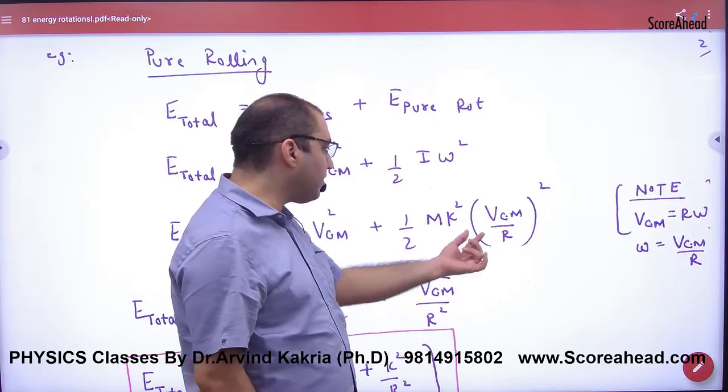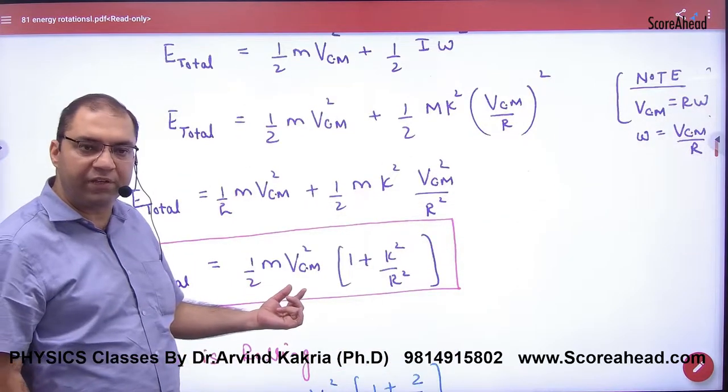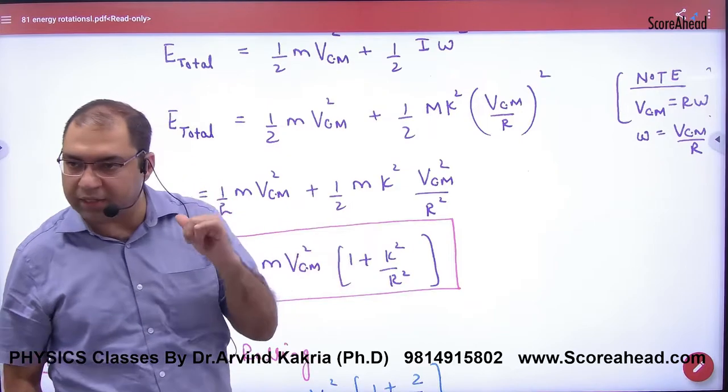So we have to square here. Solve. What will happen? ½mV_cm² times (1 + k²/r²). So remember this.